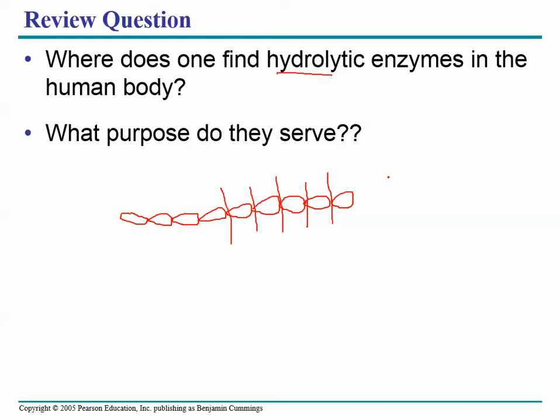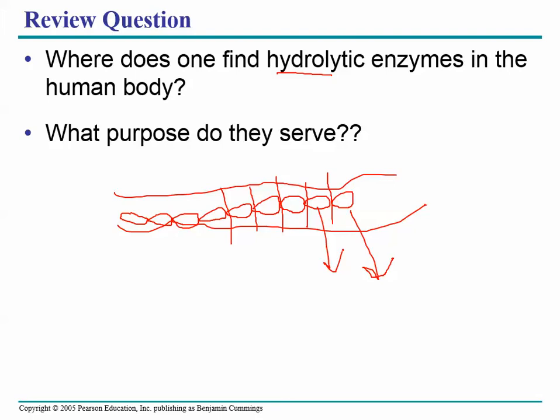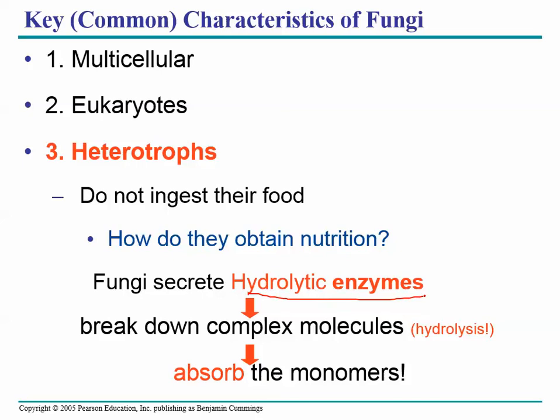These individual building blocks are absorbed from your gut into your bloodstream — all this digestion happens in your intestine, and then when the protein is broken down into little building blocks, it's absorbed into your bloodstream. This is very similar to what happens in fungi. However, fungi don't have a digestive tract. Instead, the fungus squirts the enzymes into its environment, breaks down the protein into building blocks outside its body, and then absorbs them. You digest your food inside your body; fungi digest their food outside their body, and then absorb it.